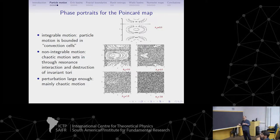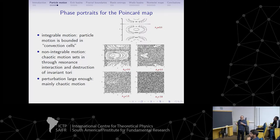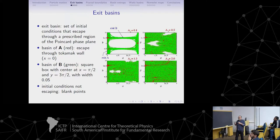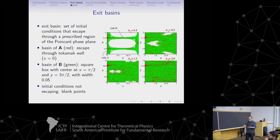Obviously there would be very tiny islands, but most of the phase space is engulfed by the chaotic motion. So it is interesting to ask: in this case, will transport be uniform? Surprisingly, the answer is no, because we have those fractal structures.